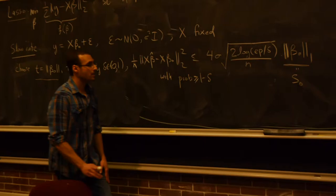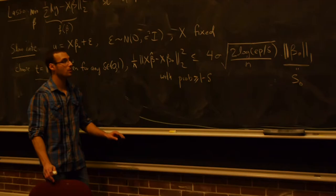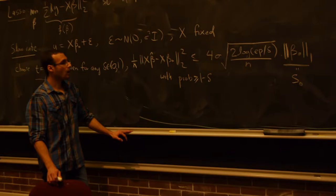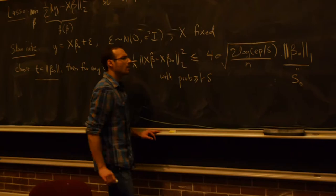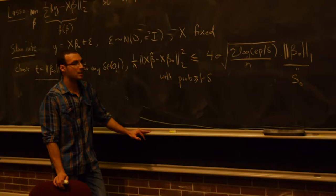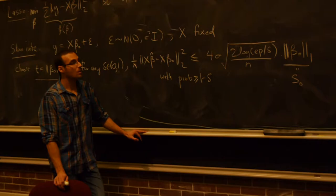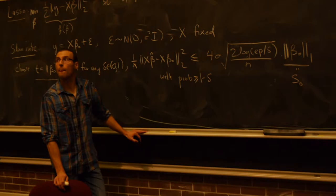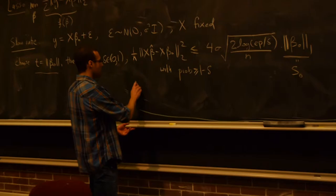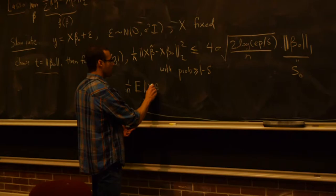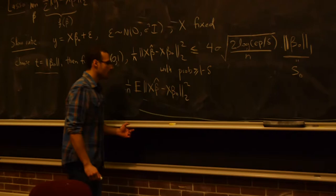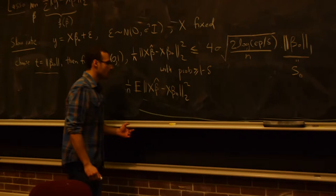The rate s-zero log(p)/n is roughly the minimax rate, so subset selection was doing about as good as we could hope in this generic situation. Now, what would you expect the expected in-sample risk to be? If I took an expectation, what order would you expect it to be — big O of something?